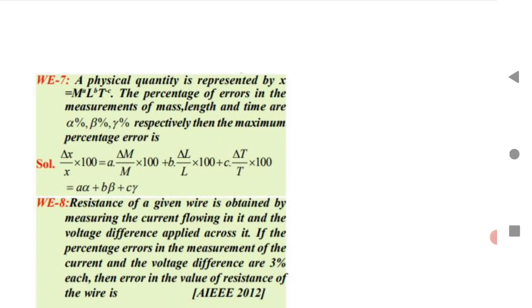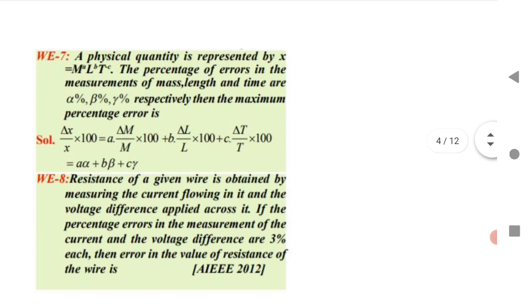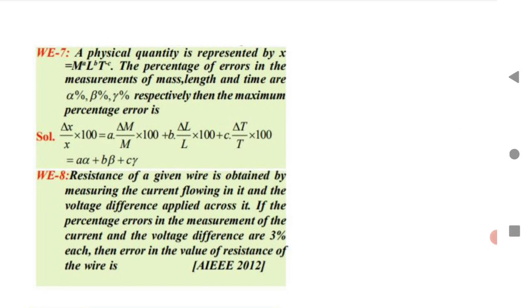If a physical quantity x depends on mass, length, and time, and the percentage errors in mass, length, and time are alpha, beta, and gamma respectively, the maximum percentage error is: (delta x / x) × 100 = a(delta m / m × 100) + b(delta l / l × 100) + c(delta t / t × 100) = a·alpha + b·beta + c·gamma. Substitute the powers to get the answer.